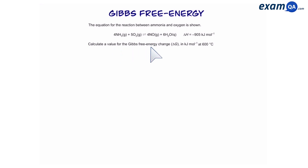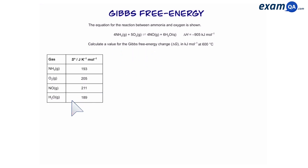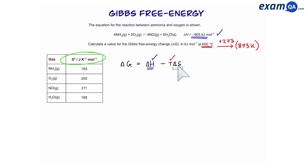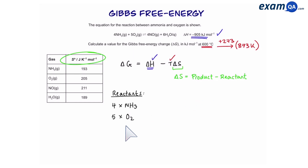Here's an example question: calculate the value for delta G, and we've also been given entropy data. To work out delta G, we're going to do delta H minus T delta S. We've already been given the value for delta H, and temperature is given to us — however it's in degrees Celsius, so we're going to add 273 to turn that into Kelvin. To work out delta S, we haven't been given it directly, so we're going to use the data. Reactants first: 4 times ammonia and 5 times oxygen.